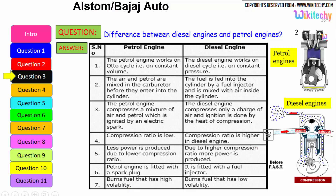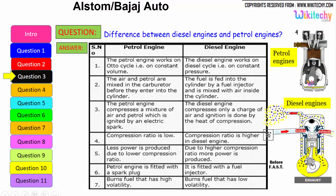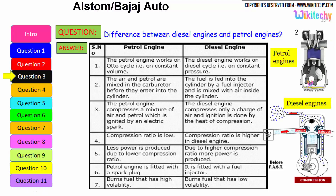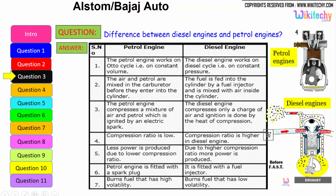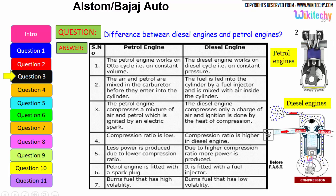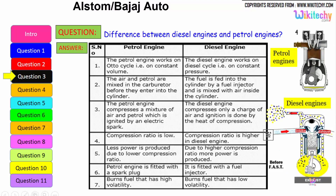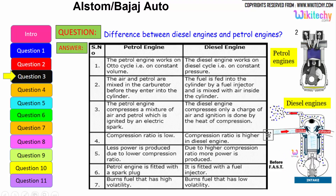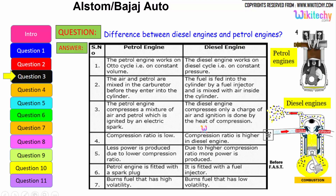The petrol engine burns fuel with high volatility — petrol is highly volatile — whereas the diesel engine can burn low-volatility liquid as well. These are some of the key differences between the petrol engine and the diesel engine.